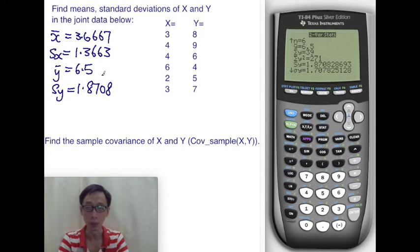But here we have a second question: find the sample covariance of x and y. So covariance of x and y, the sample version, the sample covariance of x and y. Let's try to recap.